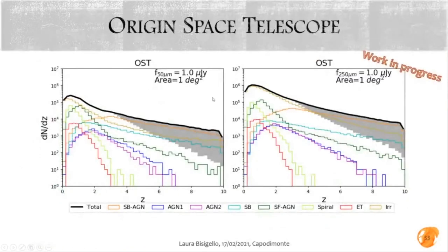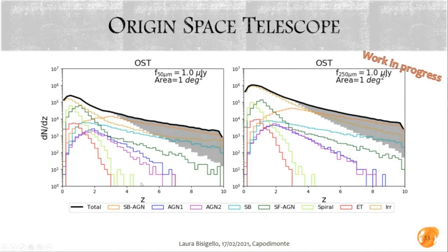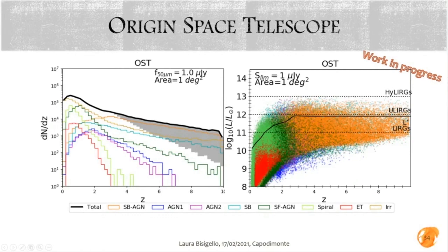These are some predictions for the Origins Space Telescope — still work in progress as I used arbitrary flux limits and area, to be updated with the actual OST plans. I show the redshift distribution of galaxies detected at 50 and 250 micrometers. The black line shows the fiducial simulation, the gray area shows the variation with different extrapolations, and the different colored lines show the different galaxy populations. One can also look at the infrared luminosity of the detected galaxies as a function of redshift to understand what limits are achievable given the adopted area and depth.